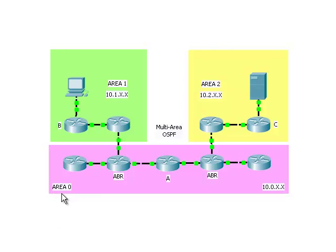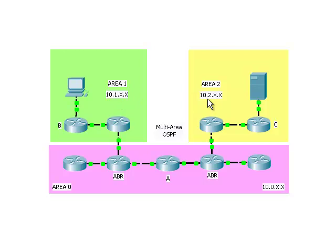Here we have area 0 in purple, area 1 in green, and area 2 in yellow. To make things easier, we have a 10.0 network for everything in area 0, a 10.1 network for all the networks in area 1, and a 10.2 network for everything in area 2.